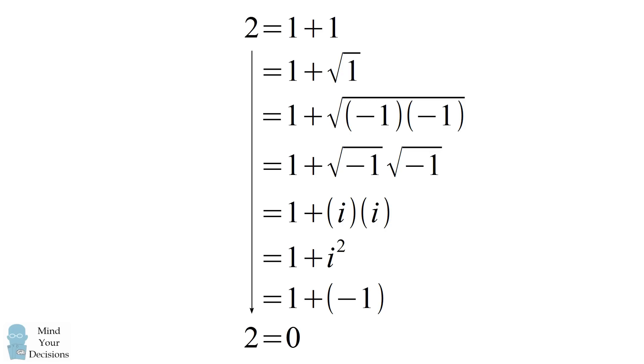So when Wolfgang sent me this email, I immediately spotted the mistake because it is a common fallacy. The problem comes when you take the square root of a product of negative terms. It's okay to take the square root of negative 1 times negative 1. What you cannot do is then take the square root of each term.